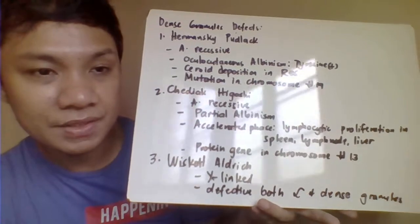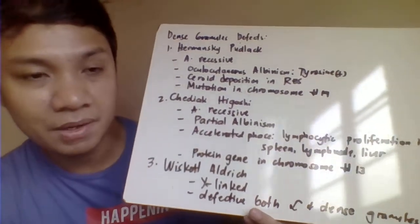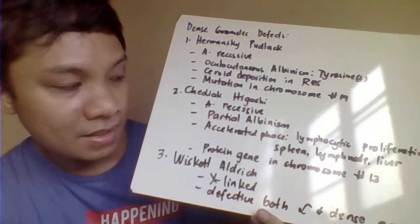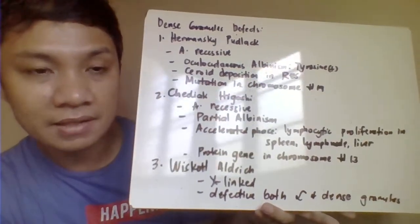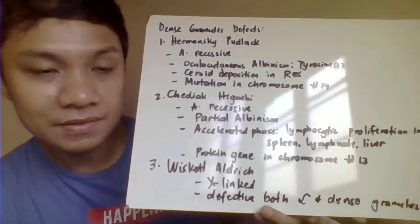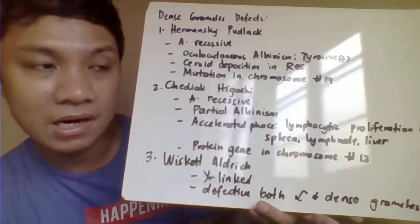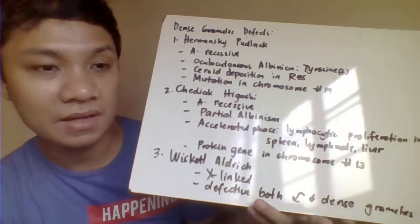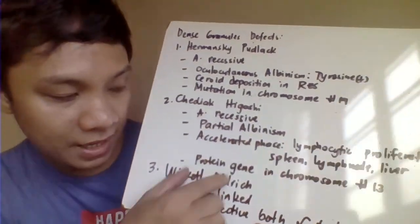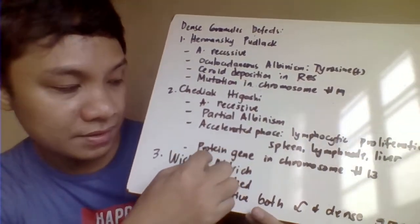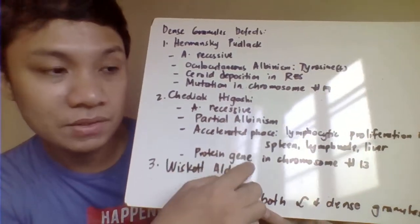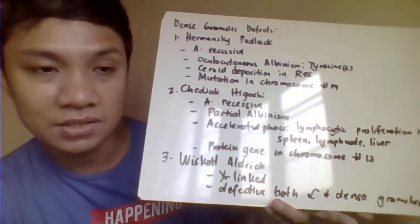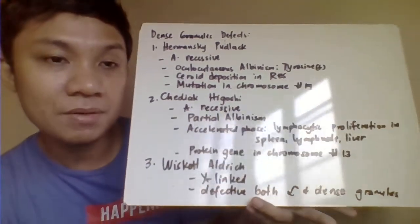Next is Chediak-Higashi syndrome — autosomal recessive — but with only partial albinism. The accelerator phase is characterized by lymphocyte proliferation in lymph nodes, liver, and bone marrow, and deposition of macrophages in tissues. The defective protein gene responsible for Chediak-Higashi is located on chromosome number 13.